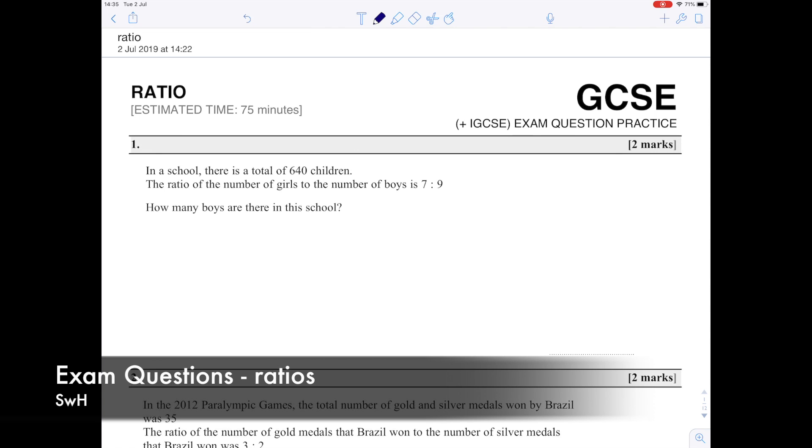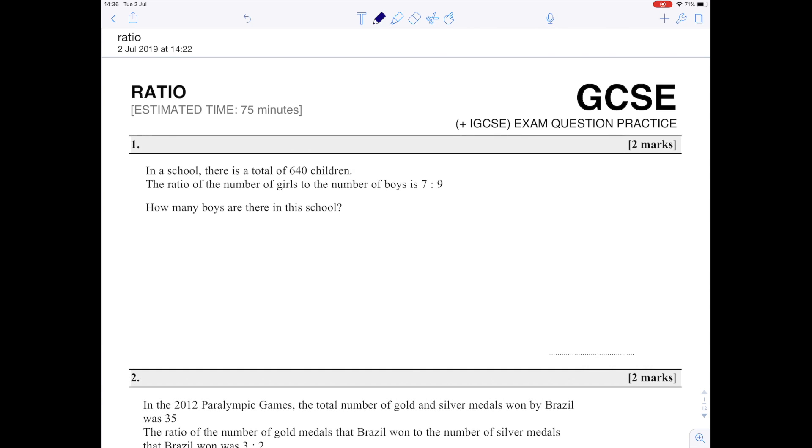Today we're going to look at a few questions on ratio. First question: in a school there are 640 children. The ratio of the number of girls to the number of boys is 7 to 9.